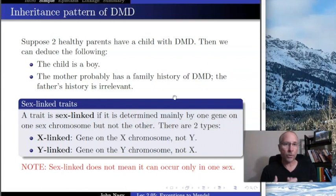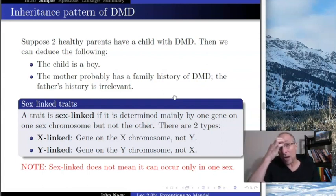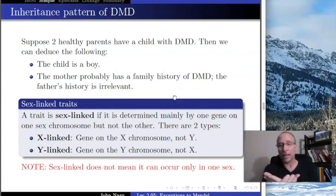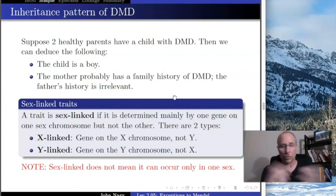Y-linked traits are very straightforward and easy to follow. There's one Y-linked trait that is obvious, and that's being male — if you have the SRY region of the Y chromosome, you develop anatomically male. Y-linked traits always have that property: males can get them, but females can't. I think that's why people get into the misconception that X-linked means only females can get it.